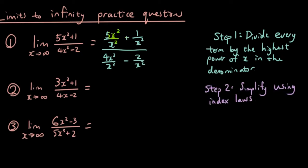So then I have x² divided by x², which cancels down to 1. And then I have x² divided by x², which is 1. And so if I write out my simplified fraction, it becomes 5 plus 1 over x². It's just 5 because 5 times 1 is just 5, over 4 minus 2 over x². So that's step 2 done.